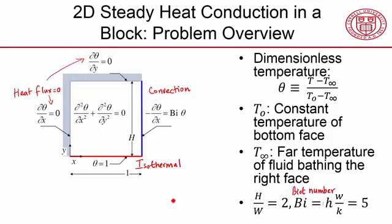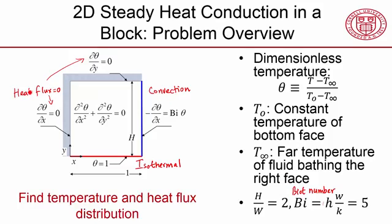And this problem shows you the three major boundary conditions you get in a conduction problem: isothermal, convection, and heat flux. So we'll find the temperature and heat flux distribution in the block using ANSYS.